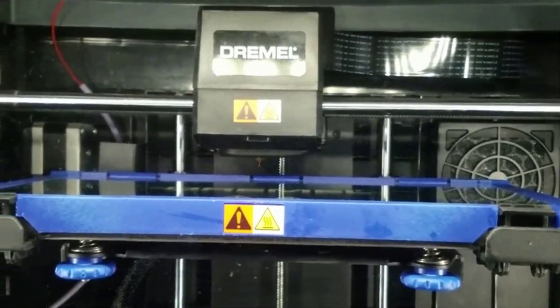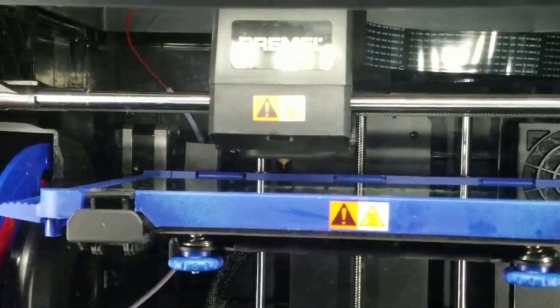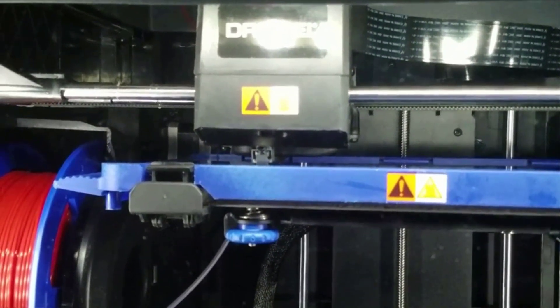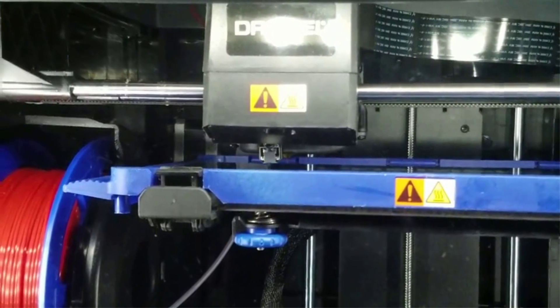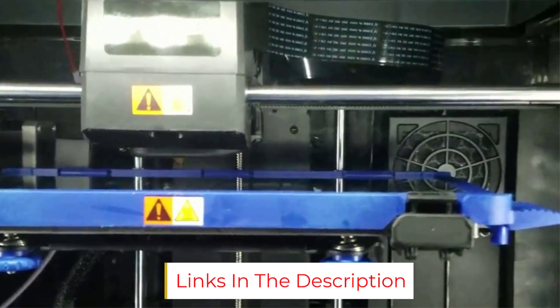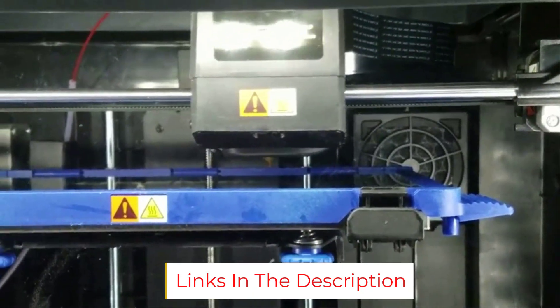One of the few gripes some users have is that the printer was designed primarily to use proprietary Dremel filaments, which come in a limited selection of colors and tend to be pricier than aftermarket filaments. To use off-brand filaments, you may have to buy a spool stand or make adapters to pipe through larger rolls.